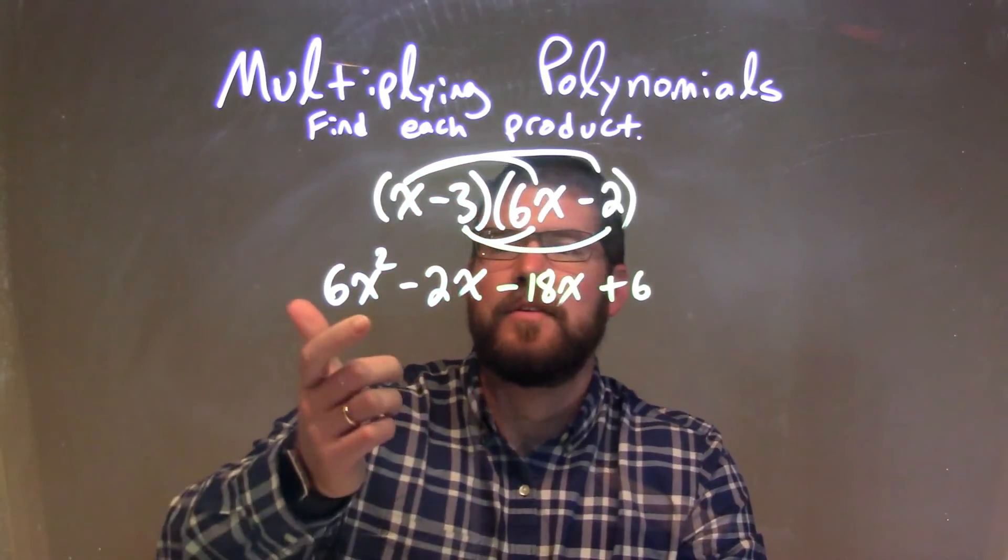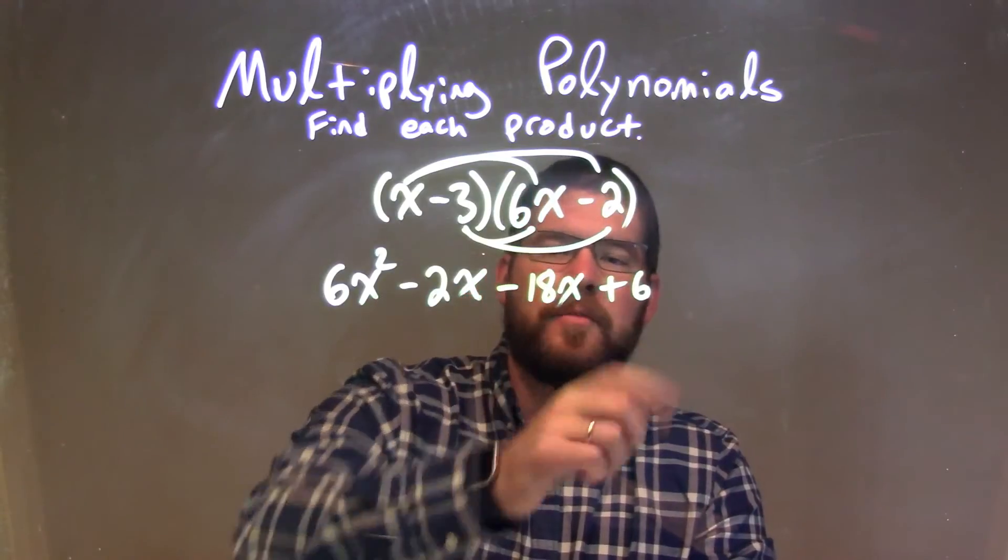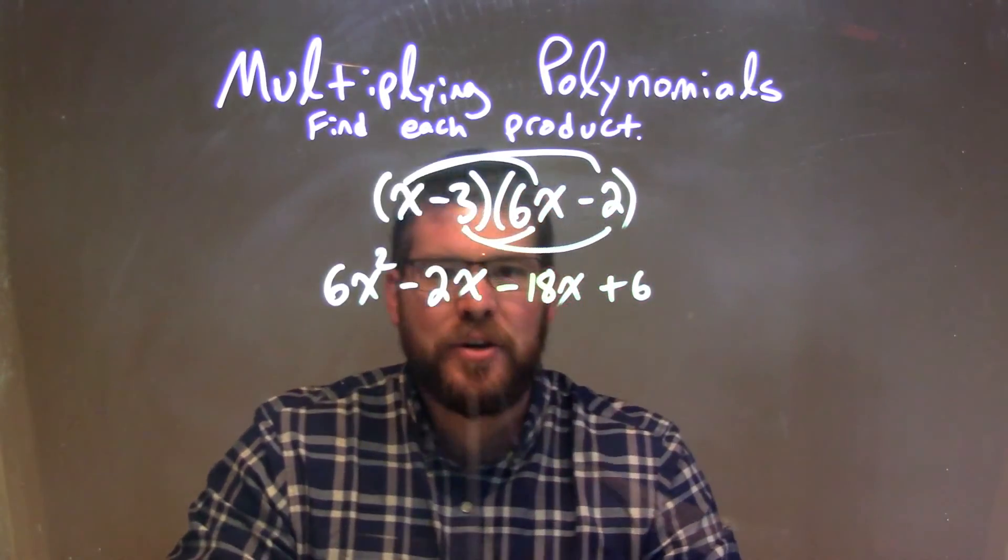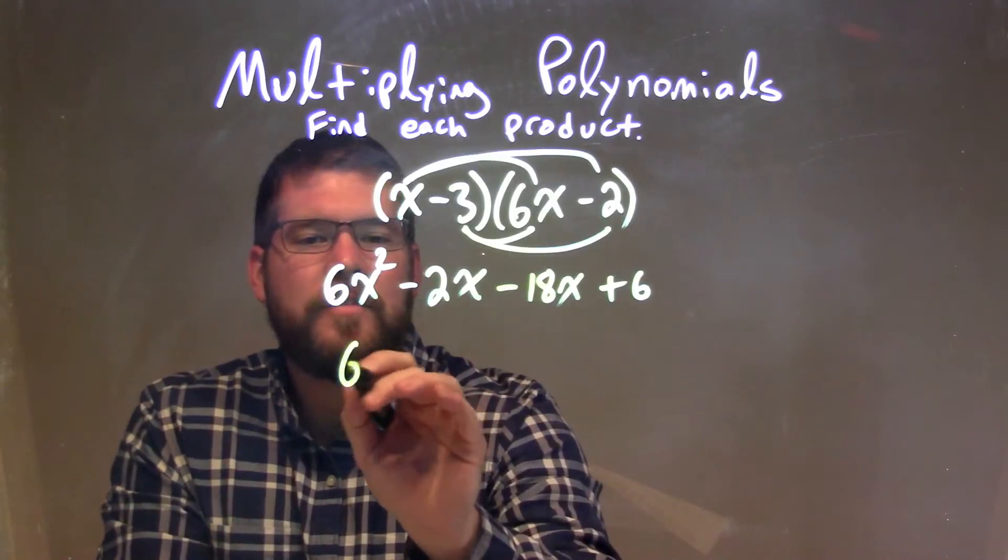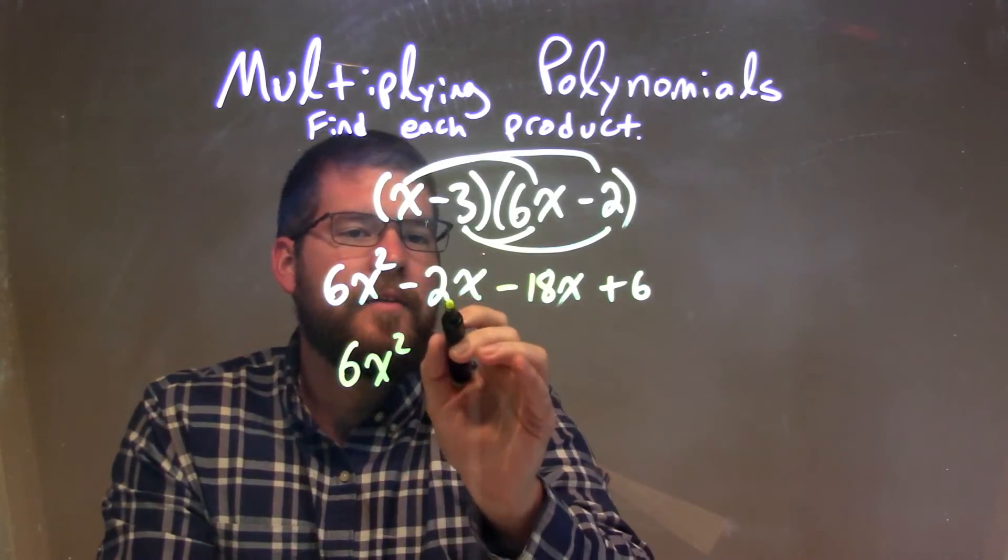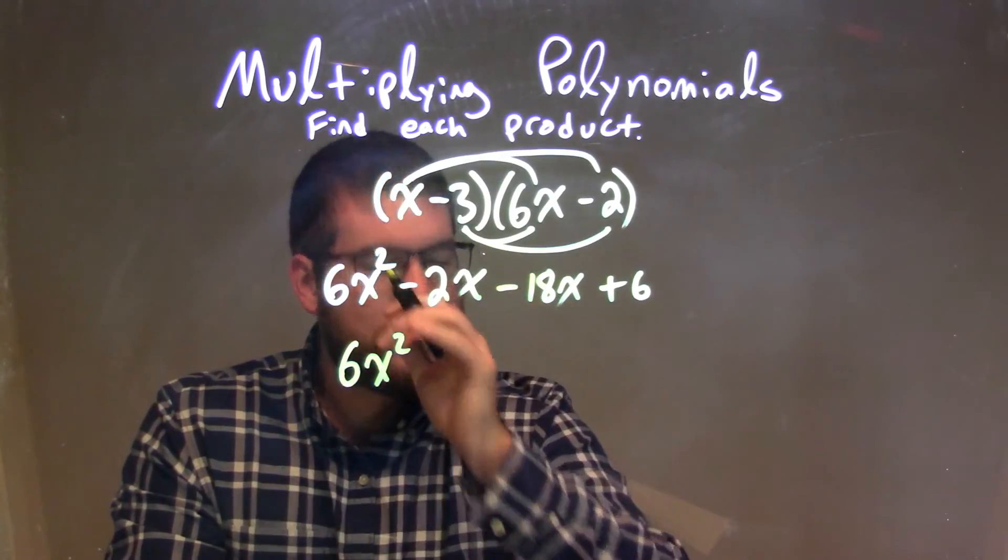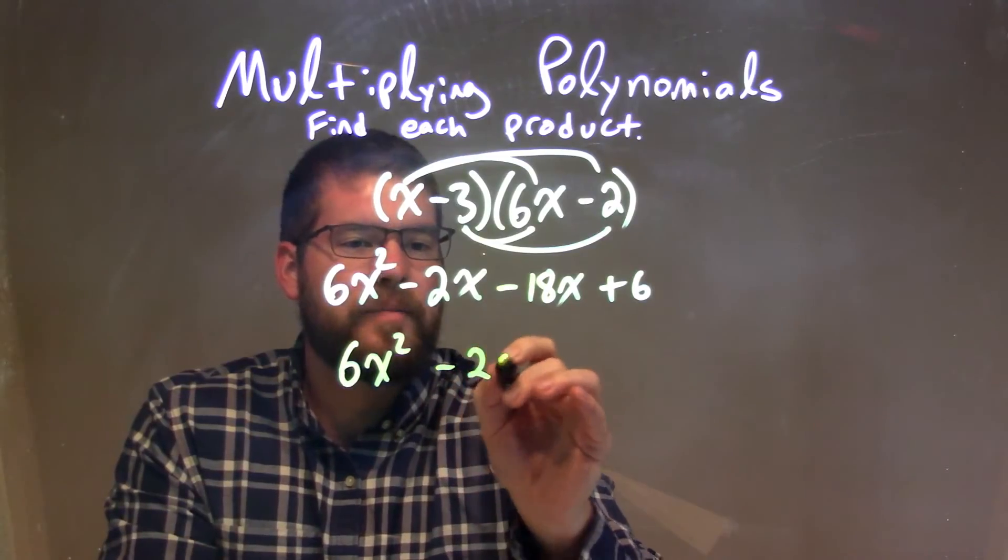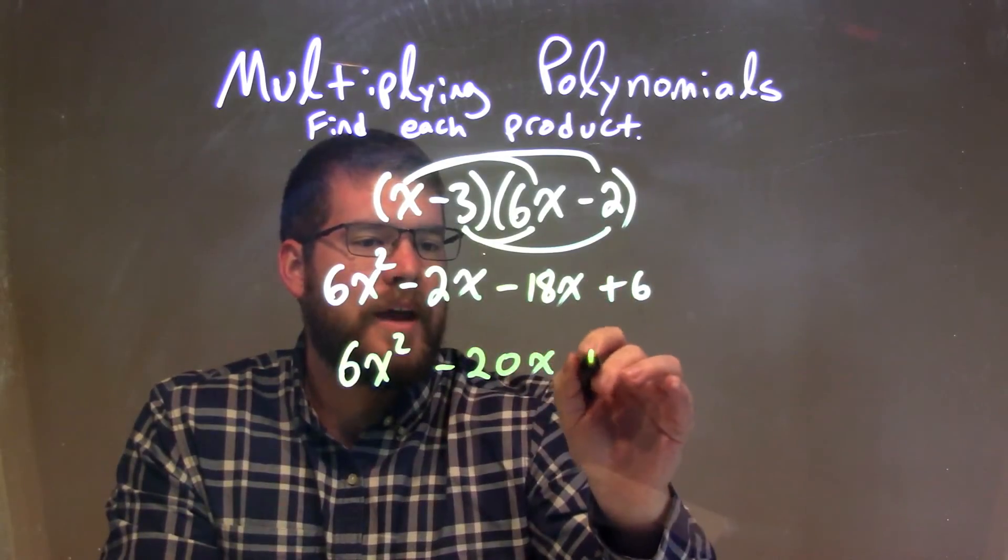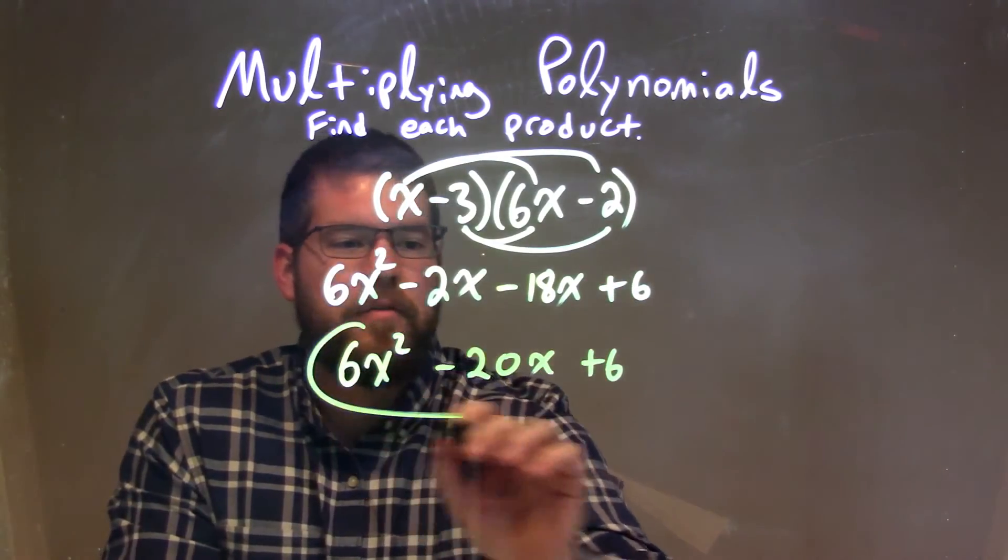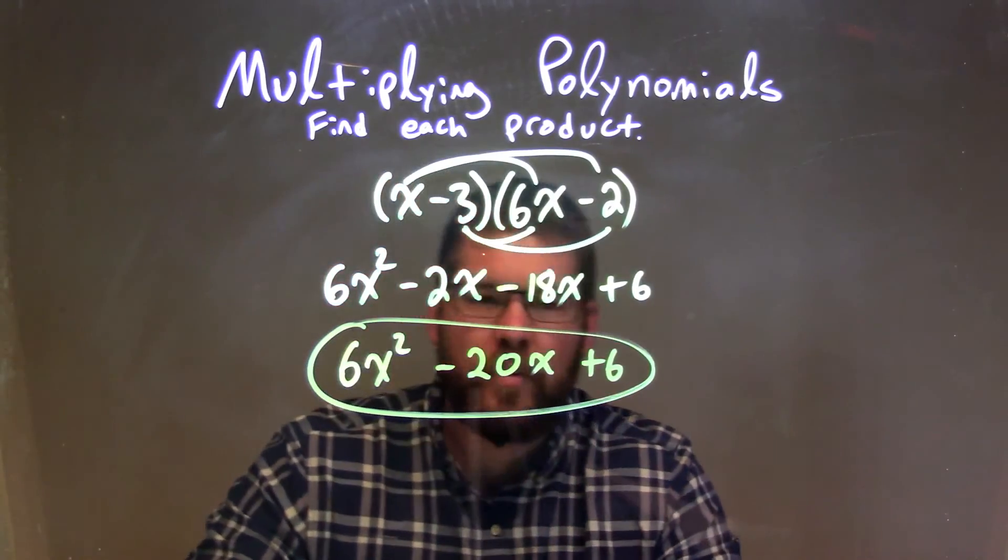So now we have 6x squared minus 2x minus 18x plus 6. We need to combine our like terms, which is just the x variables. So we have 6x squared, negative 2x minus 18x, well that comes down to be a minus 20x, and then we add a 6 at the end, and there we have our final answer of 6x squared minus 20x plus 6.